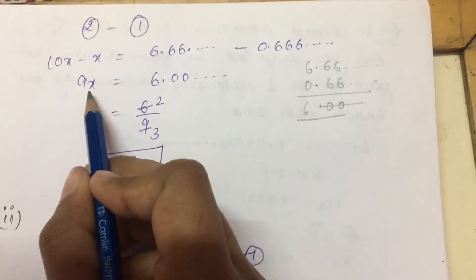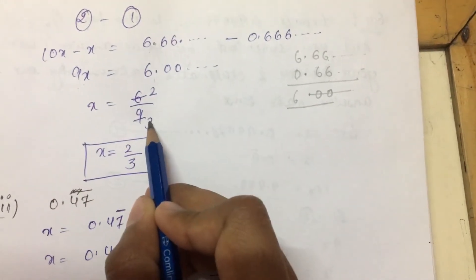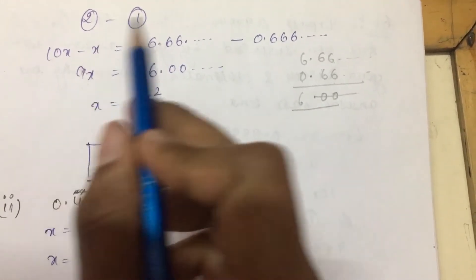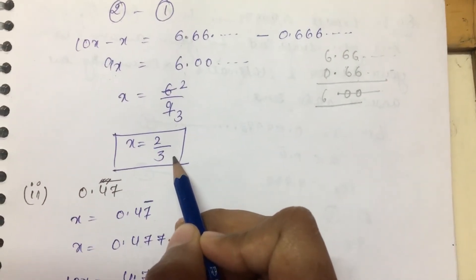So we have 9x equals 6. x equals 6 over 9. When we divide and cancel, the answer is 2 by 3.